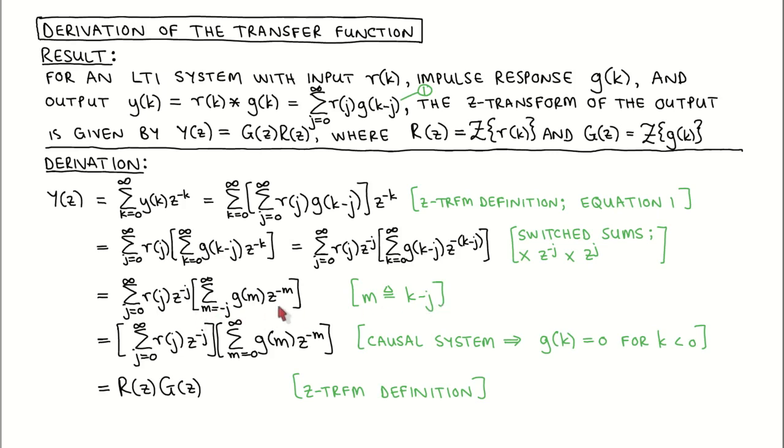The inner sum is now almost a Z-transform, but the summation goes from minus J instead of zero. However, we work with causal systems, which means that the system cannot react to an input before the input is applied. Mathematically, this is captured by writing that the impulse response is zero for negative K values.